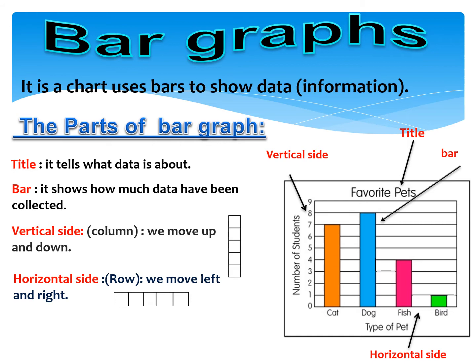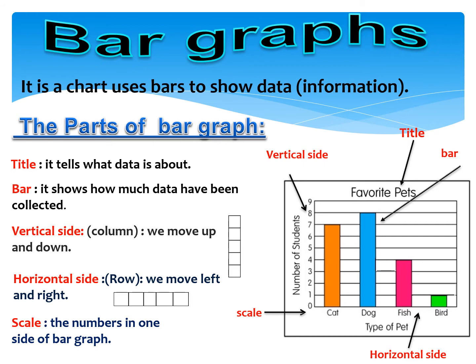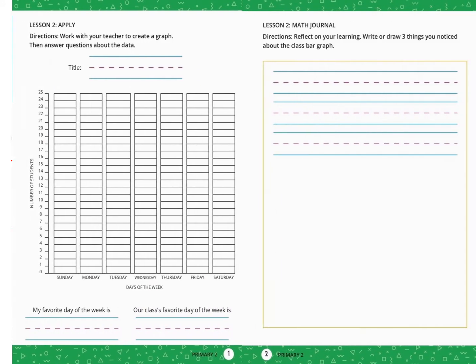The name or label for the vertical side is "number of students." And the name or label for the horizontal side is "type of pet." The sixth part is called the scale. Scale is the numbers on one side of the bar graph. The scale may be on the vertical side or the horizontal side.